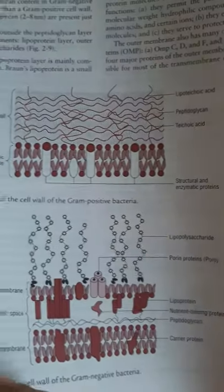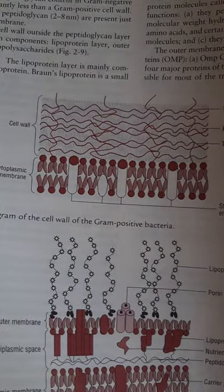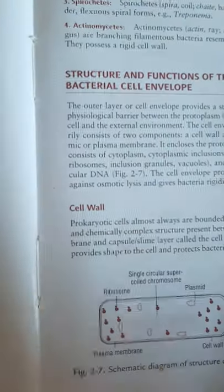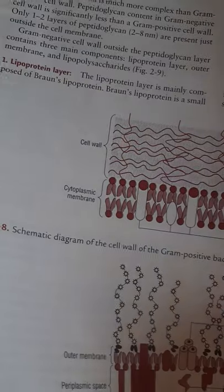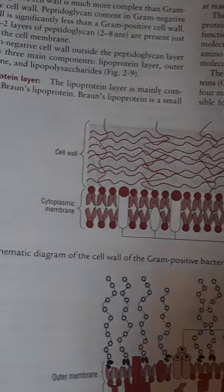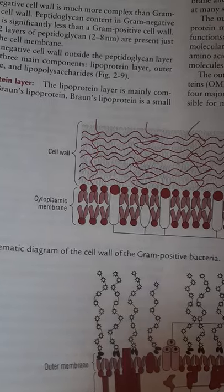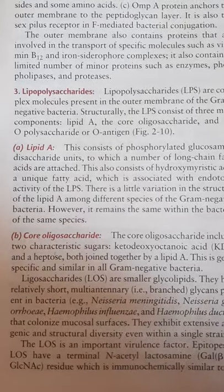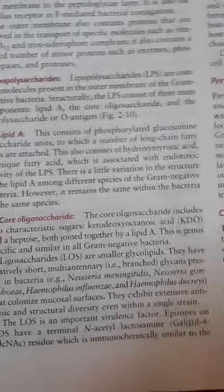Gram staining is designed to easily differentiate gram-positive and gram-negative bacteria based on cell wall differences. Gram-positive bacteria have peptidoglycan as the main component. Gram-negative bacteria also have peptidoglycan but additionally have lipoproteins, outer membrane, and lipopolysaccharides. Lipopolysaccharides are further divided into Lipid A, core lipopolysaccharides, O-polysaccharides, and O-antigen.